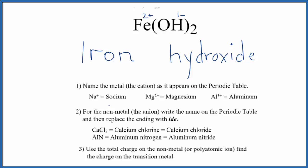So to show that this iron has a charge of two plus, we put Roman numeral two between the iron and the hydroxide. That gives us the name iron two hydroxide. If we had iron three hydroxide, that would be Fe(OH)3.